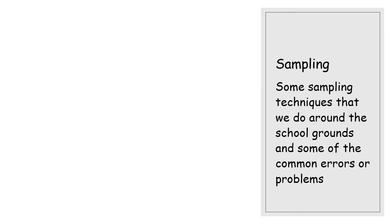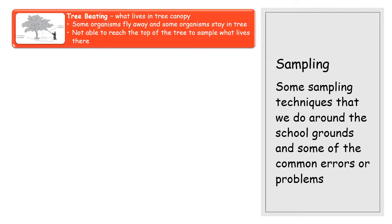Now that we have measured the abiotic factors in the various areas around the school, we can do some sampling — finding what is living in those areas. We can then start to do a correlation between the abiotic factors and the distribution of organisms in those various places. Here are some sampling techniques that we normally do around school.